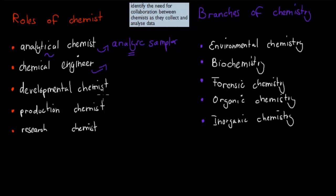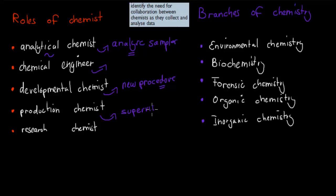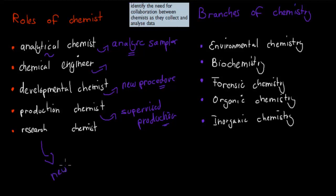We had the developmental chemist, who creates new procedures for industry — for example, coming up with safe and efficient ways of producing iron ore. We had the production chemist, who supervised those procedures, making sure the production of iron, for example, went ahead as planned, and alerting the developmental chemist if there were any problems. And there was the research chemist, who came up with new ideas and new products.